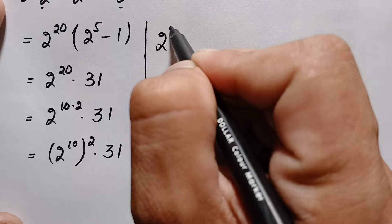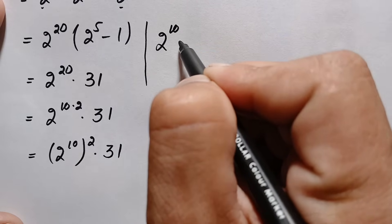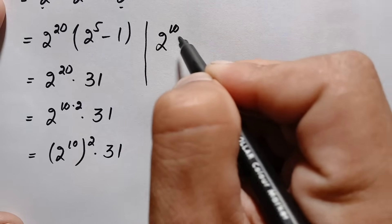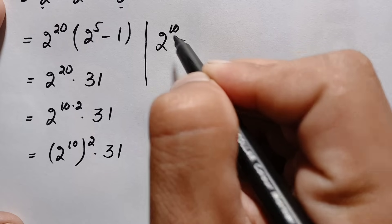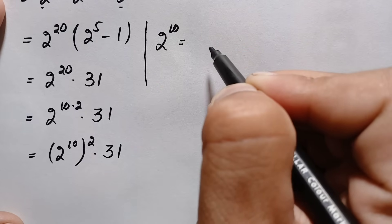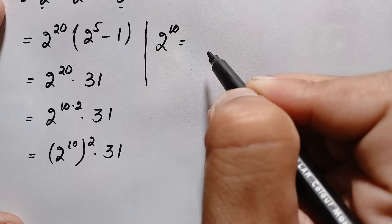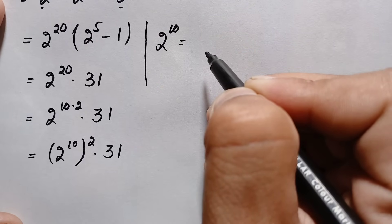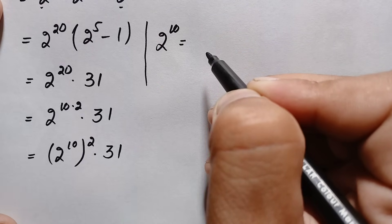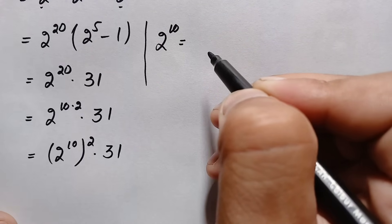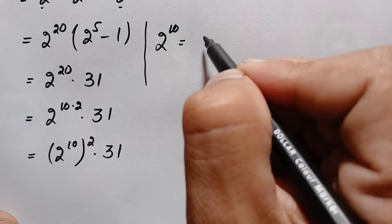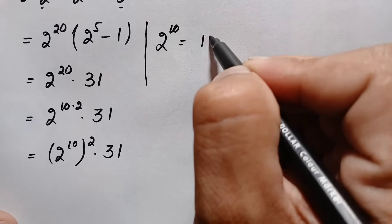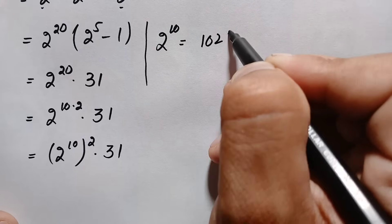2 raised to power 10 means multiplying 2 ten times. This is a very famous number equal to 1024.